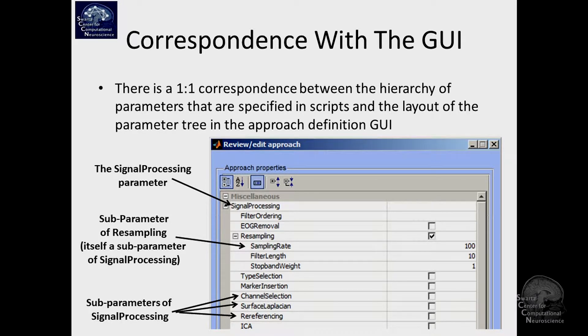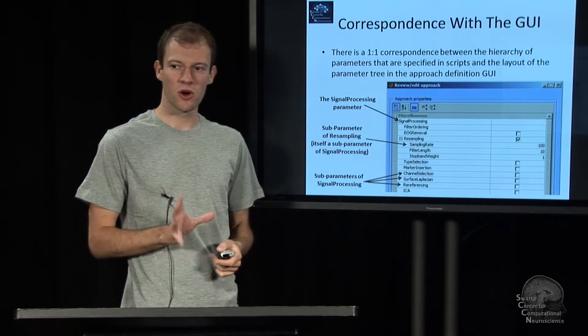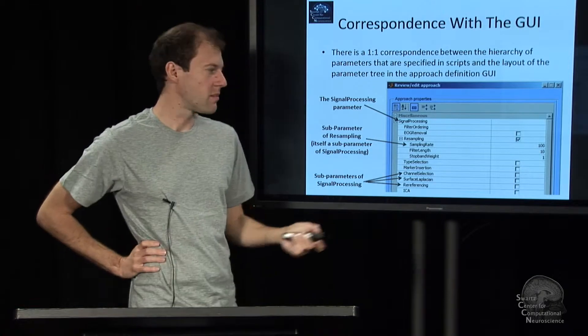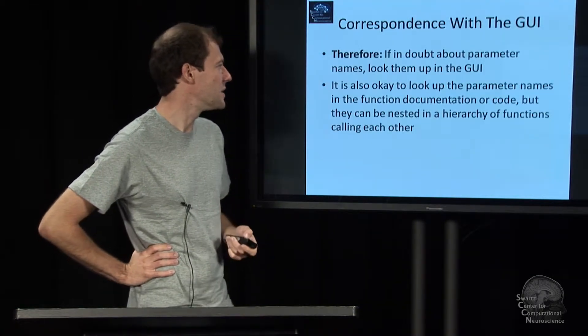This panel has the top-level parameter, the signal processing parameter, and then there are several subparameters to that: EEG removal, resampling and so on. This one has a sub-sub parameter if you will, that's a particular way you want to apply this resampling, which sampling rate and so on. You see that it's a hierarchy, and if you're in doubt you can always go back to the GUI and just look them up and type them in.